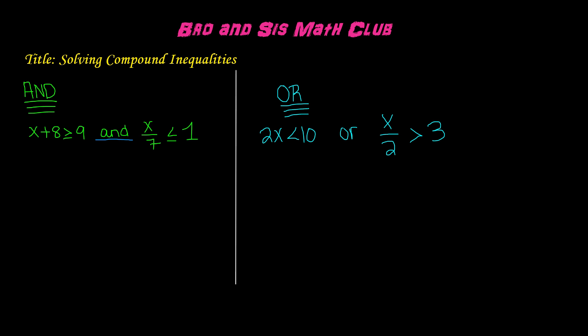When you're adding 8 to x, in order to get rid of it, we have to use the inverse of addition, which is subtraction. So we will subtract 8 from both sides. Positive and negative 8 cancel each other out, and we're left with x is greater than or equal to 1. This is the solution to this inequality.